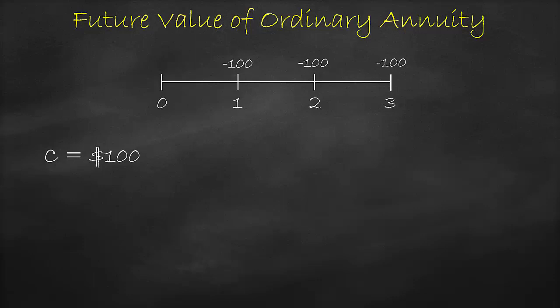First, let's draw a timeline. We have three years: $100 in year one, $100 in year two, and $100 in year three. In this example, we have the following variables: a cash flow of $100, an interest rate of 10% per annum, the number of periods is three years, and the future value is the unknown variable.